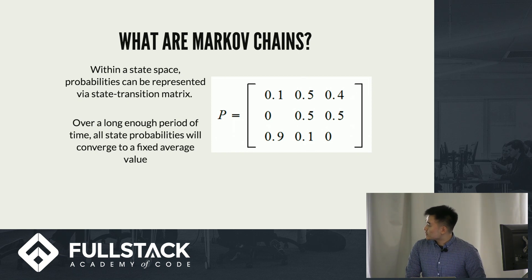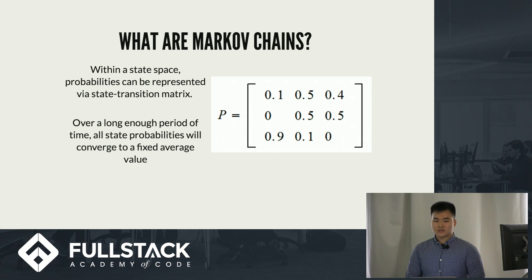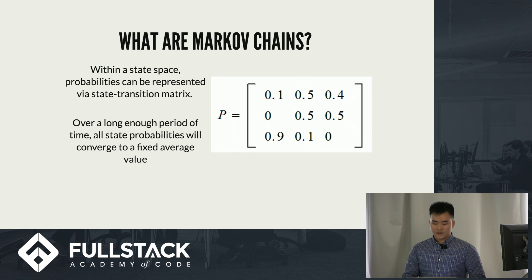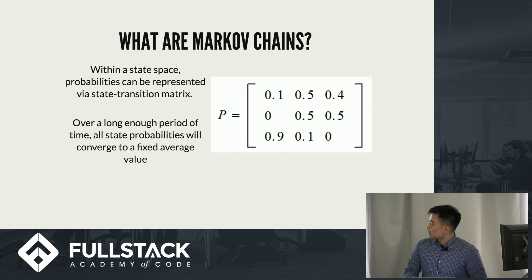Markov chains are usually determined through a transition matrix, as you can see to the right. Each element on the transition matrix is related to a state and a state transition. As you can see, on every row it adds up to one, so in every state you have to eventually transition to some state. For example, the top row: the first element would be a 10% chance of going to itself, the second says that first state has a 50% chance of going to the second state, and the last one says a 40% chance to the third.